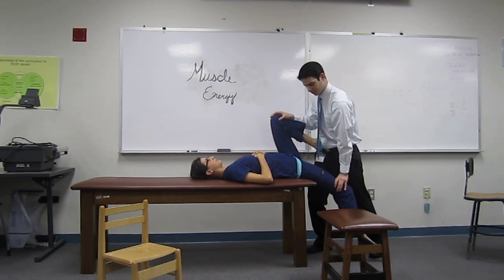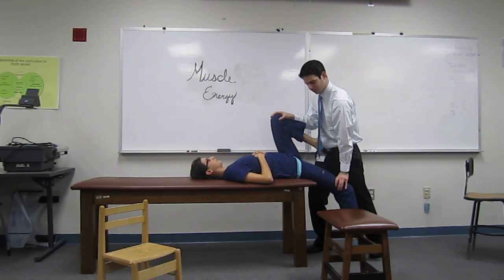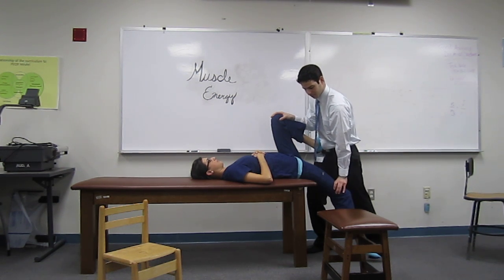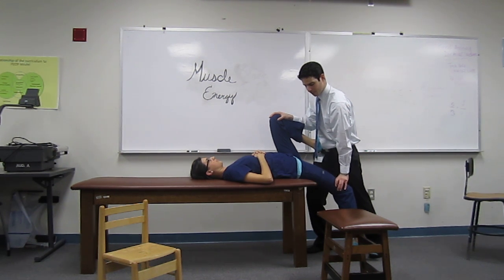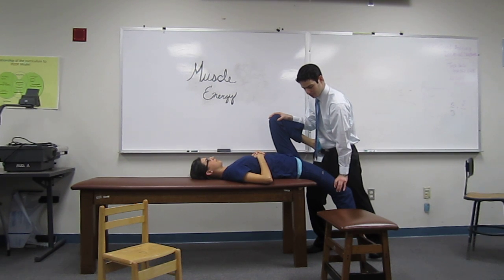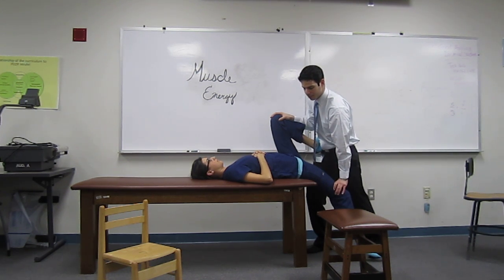The patient will then press up again for three to five seconds with hip flexion, engaging the isometric contraction. After relaxation, the physician will further engage the barrier by pushing the hip farther into extension and the patient will re-engage the barrier with an isometric contraction. After three to five seconds the patient can reset and engage the final barrier.